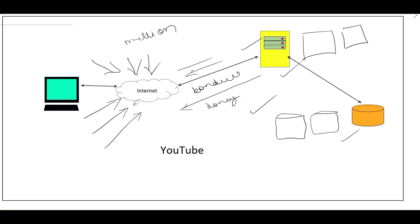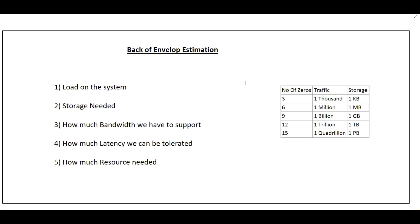Because of that, we have to do back-of-envelope estimation. When we do it, we have to calculate a few things: first, the load on the system — how much traffic we are getting per second; second, how much storage we need; third, how much bandwidth we have to support; how much latency we can tolerate (if latency is higher, we have to use caching); and how much resources — basically how many servers we need and how many cores each server is running.